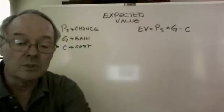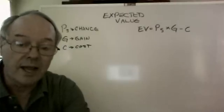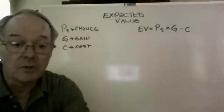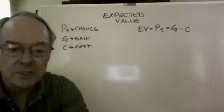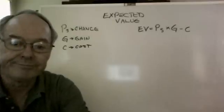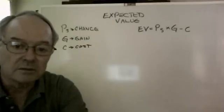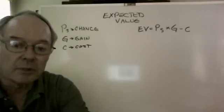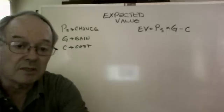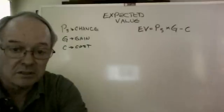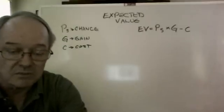Expected value is called the probability weighted average of all possible outcomes. Typically, there are two major outcomes, particularly in oil and gas exploration: success and failure. So we're really talking about the probability of success times the value of success, plus the probability of failure times the cost of failure.